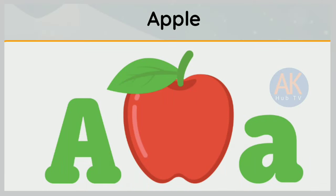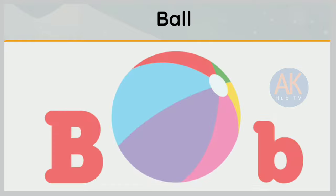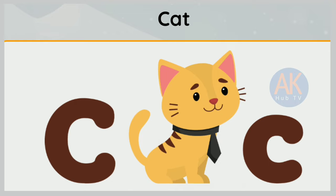A is for apple. A, a, apple. B is for ball. B, b, ball. C is for cat. C, c, cat.